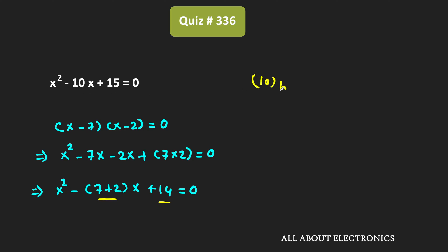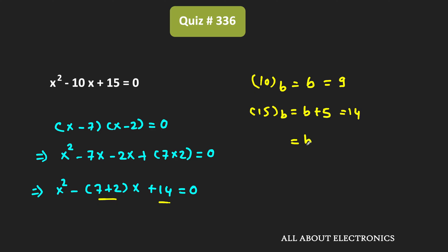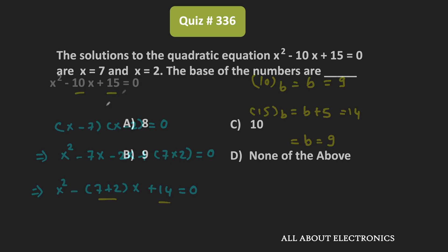Let's compare these two numbers with 10 and 15. The decimal equivalent of 10 is equal to b. Comparing it with 9, we get b is equal to 9. Similarly, comparing 15, whose decimal equivalent is b plus 5, with 14, we again get b is equal to 9. So in both ways, we get the value of b as 9.